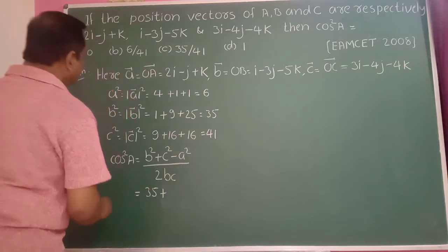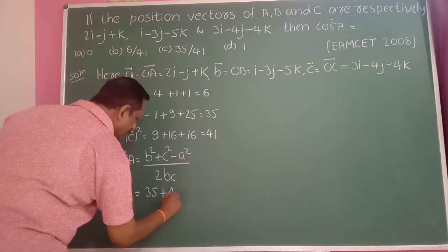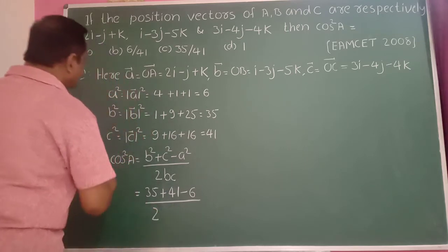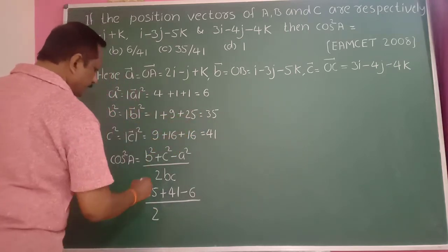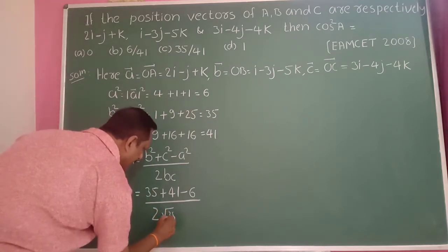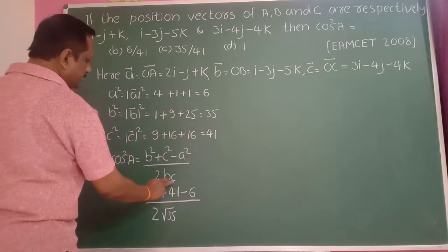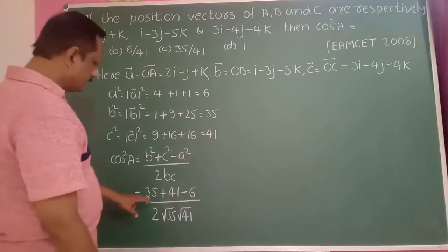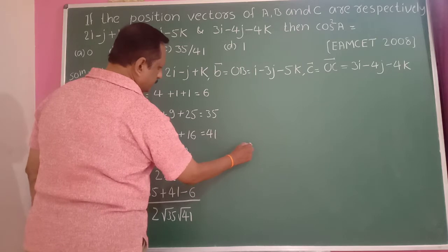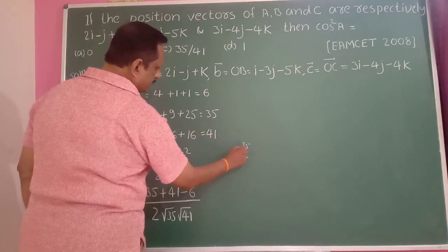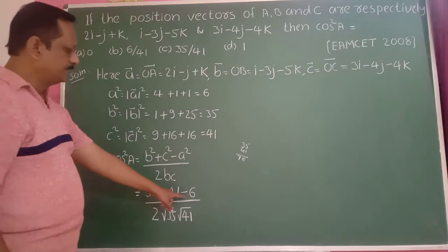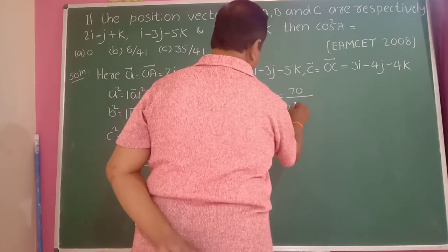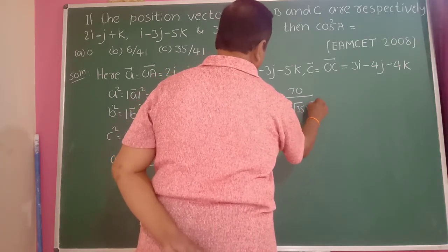So substituting: B squared is 35, C squared is 41, A squared is 6. In the numerator: 35 plus 41 is 76, minus 6 becomes 70. Therefore, this equals 70 divided by 2 into root of 35 into root of 41.